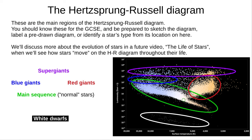These are the main regions of the Hertzsprung-Russell diagram. For the GCSE exam you should be prepared to sketch a simple diagram, label a pre-drawn diagram, or identify a star's type from its location. There are other types of stars not shown here — hypergiants above the top of this diagram aren't part of the GCSE syllabus, and black dwarfs, black holes and neutron stars aren't bright enough to make it onto the HR diagram. We'll discuss the evolution of stars in a future video, The Life of Stars, when we'll learn how stars move on this diagram throughout their life.